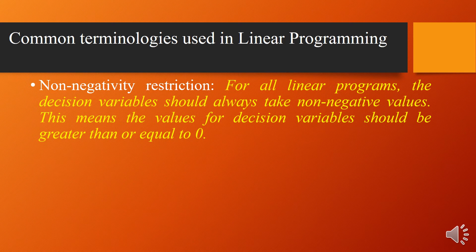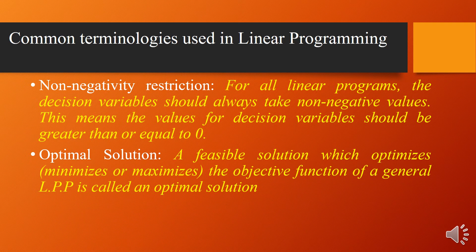Non-negativity restriction: For all linear programs, decision variables should always take non-negative values, meaning the values should be greater than or equal to zero. There is no chance of producing minus one or less than zero units. Optimal solution: A feasible solution which optimizes the objective function of a general LPP — either maximizing or minimizing — is called an optimal solution. LPP helps you find the maximum profit achievable or the minimum cost to produce the required output within the given constraints.